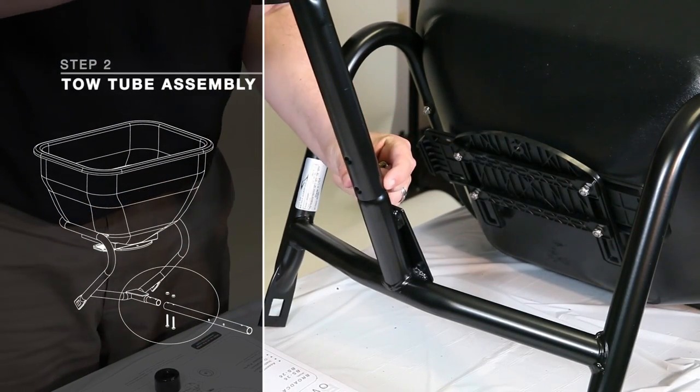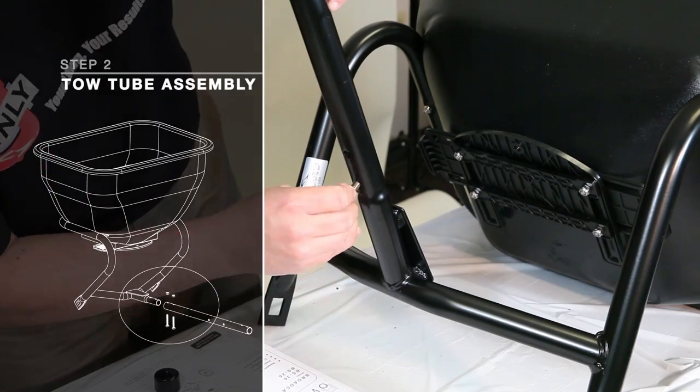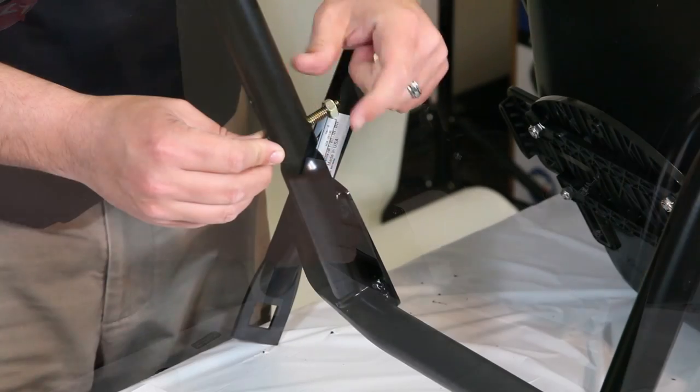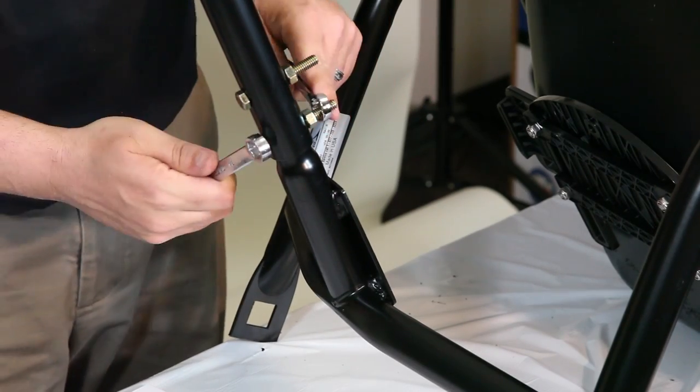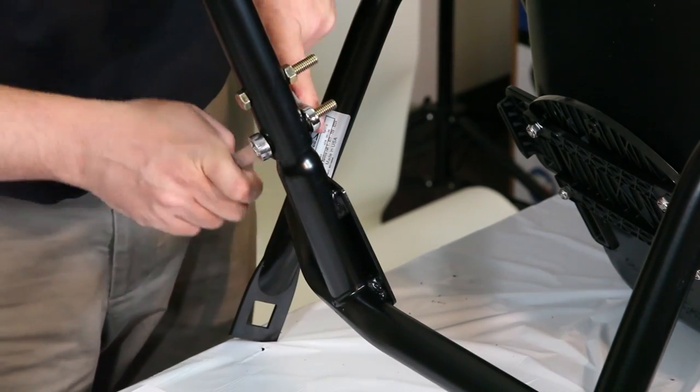Attach toe tube to the hopper support. Secure using two hex bolts number 27 and two hex nuts number 26, but do not fully tighten until after step 8.